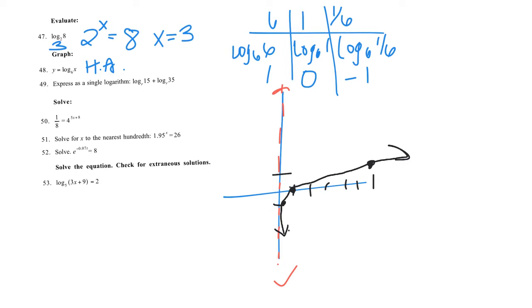Number 49, represent as a single logarithm. Our product property says two logs with the same base, they both have base R, that are added together can be written as one log when we multiply what's inside. So that's the log base R of 15 times 35, and 15 times 35 is 525. So the log base R of 525 is the single logarithm.